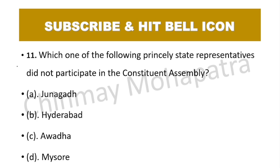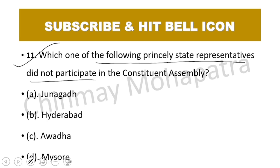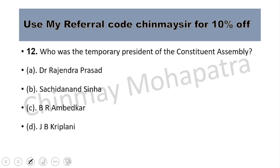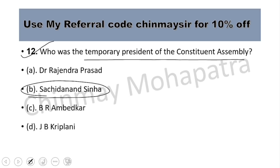Question number 11: Which one of the following princely state representatives did not participate in the constituent assembly? The right answer is Hyderabad. Question number 12: Who was the temporary president of the constituent assembly? The right answer is Satchitananda Sinha.